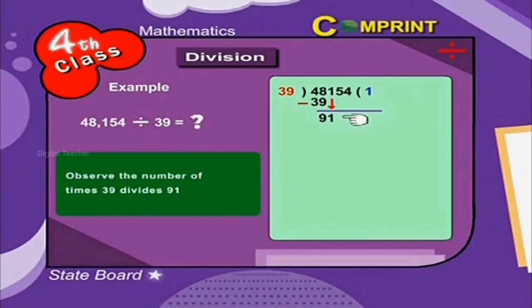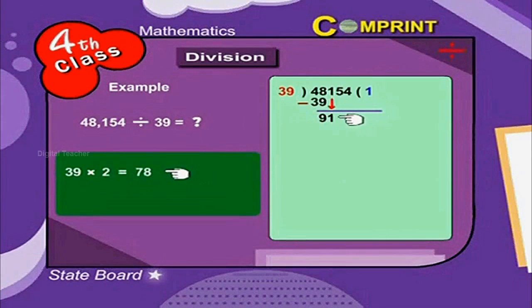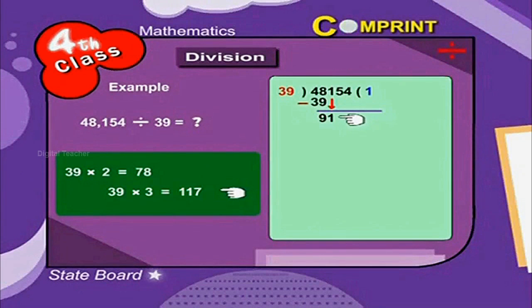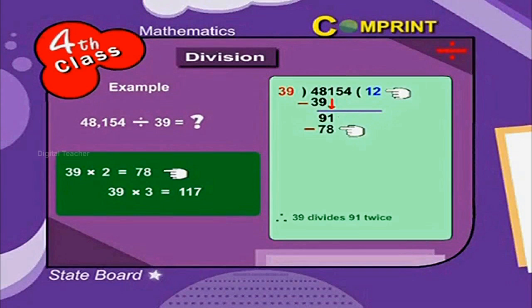Observe the number of times 39 divides 91. 39 into 2 is equal to 78, 39 into 3 is equal to 117. Therefore, 39 divides 91 twice.